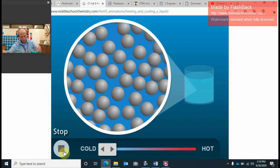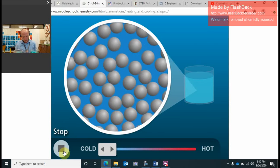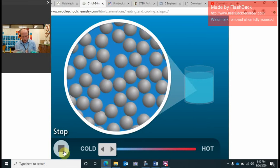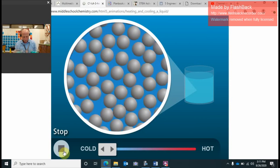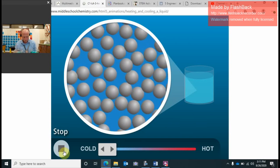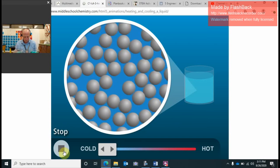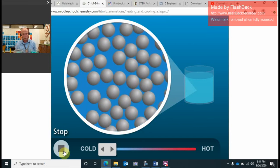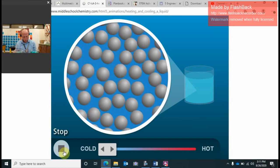So if we look at five, it says heating a substance increases molecular motion. Cooling a substance decreases molecular motion. As molecular motion increases, space between molecules increases. As molecular motion decreases, then the space between the molecules would also decrease.